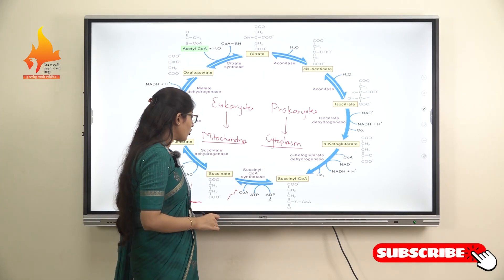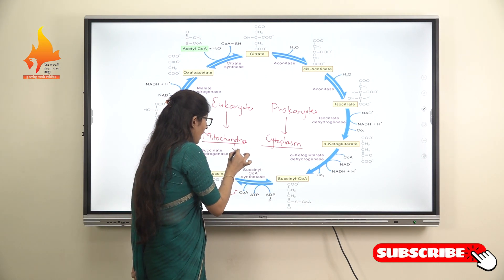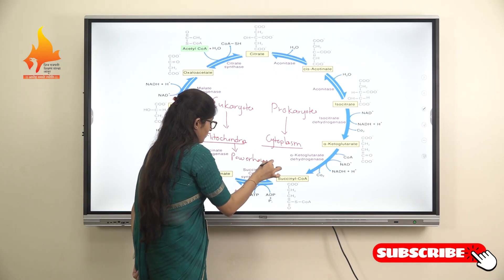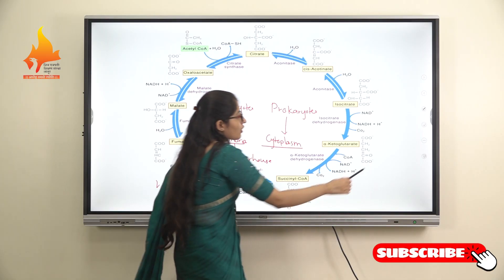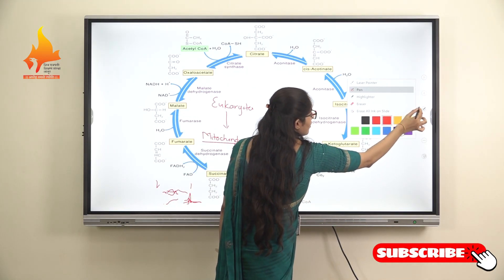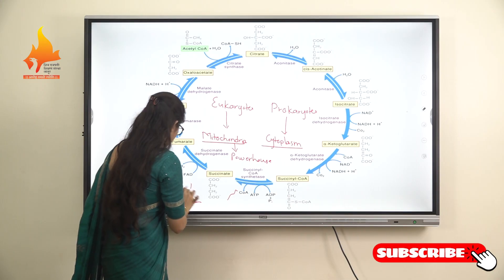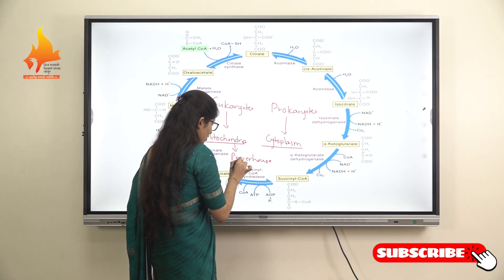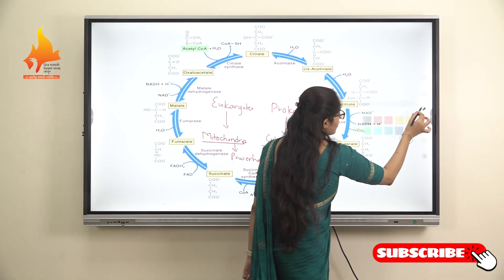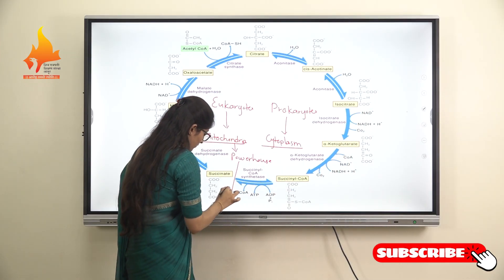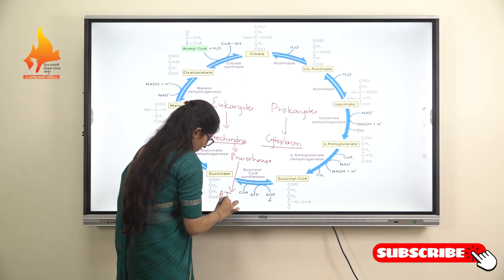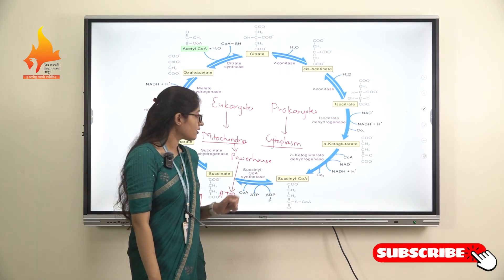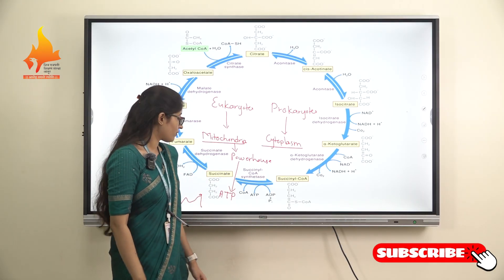When we talk about the mitochondria, it is also known as the powerhouse of the cell. Why is it called the powerhouse of the cell? Because in the mitochondria, there is generation of ATP molecules. ATP molecules are the energy currencies, which is why mitochondria is called the powerhouse of the cell.